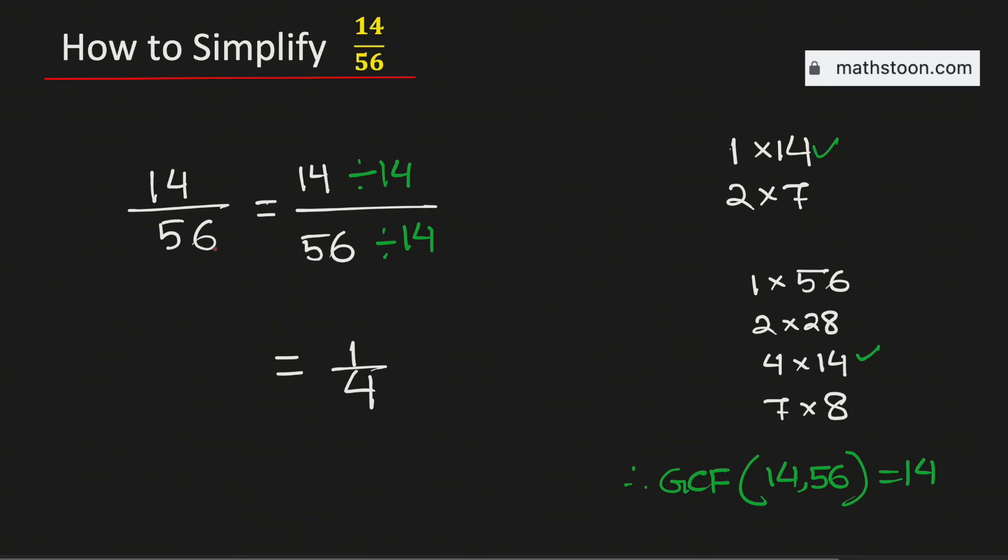So the fraction 14 over 56 simplified is equal to 1 over 4. And it is its lowest term, and this is our final answer.